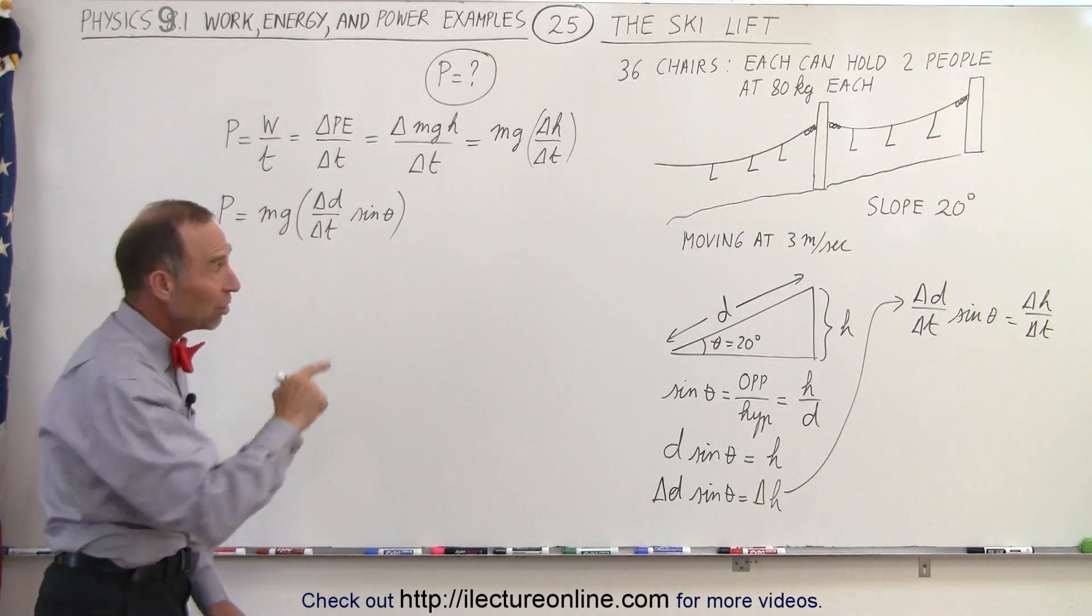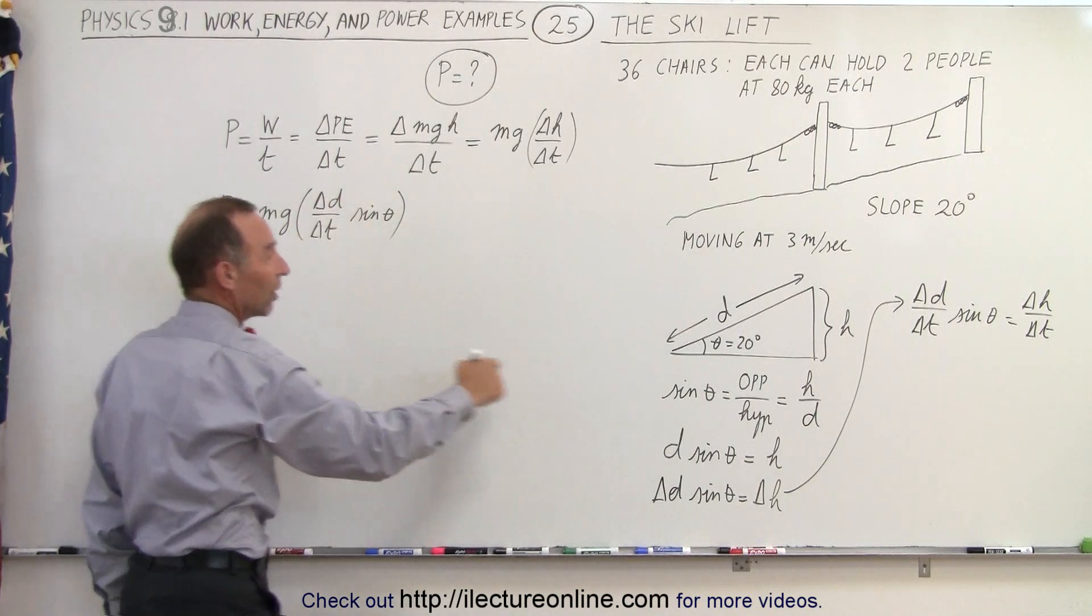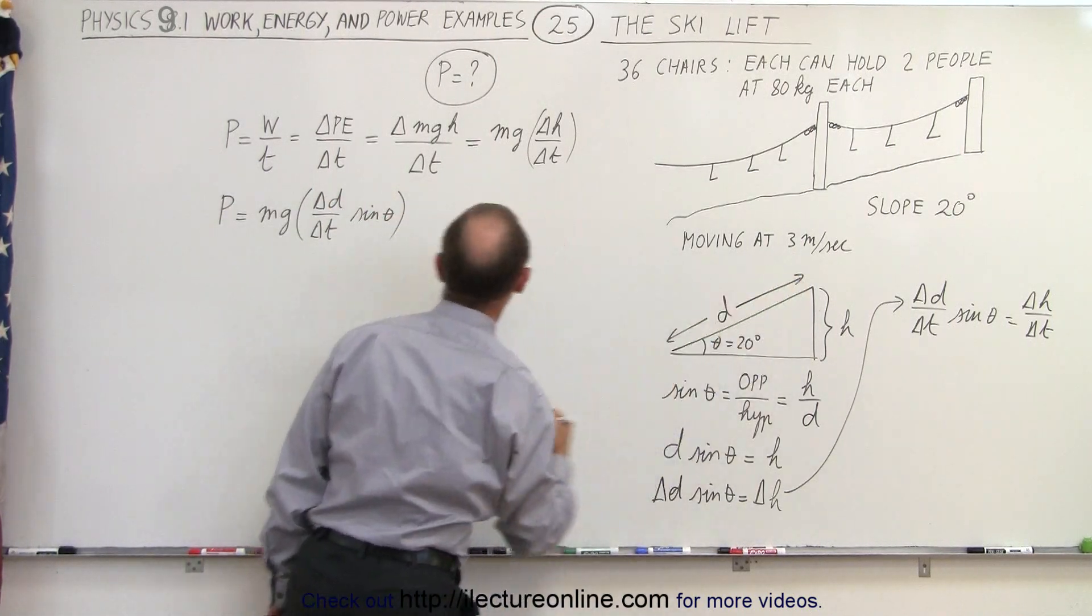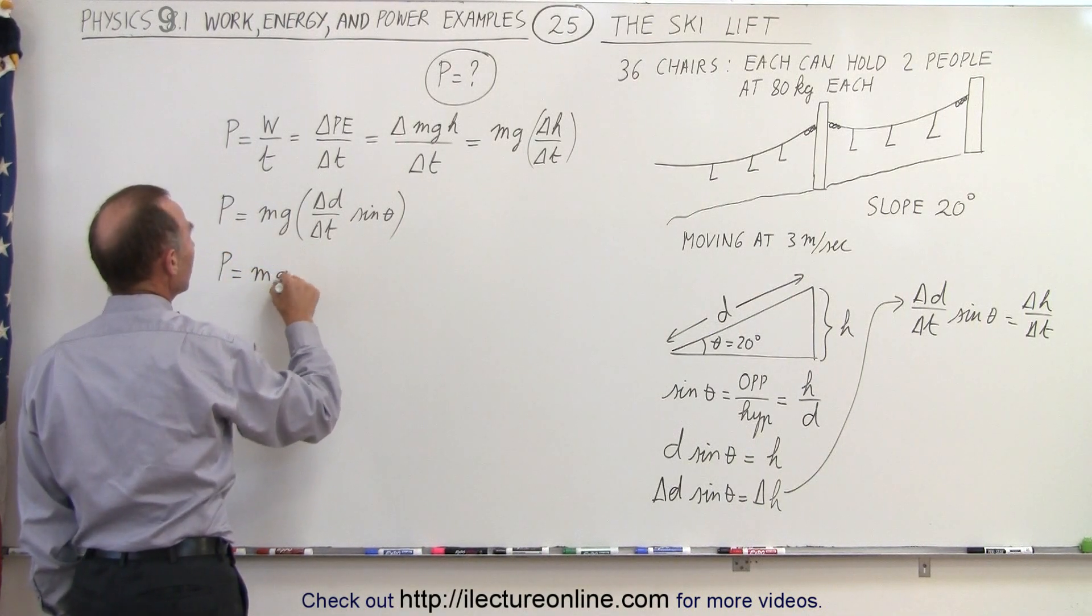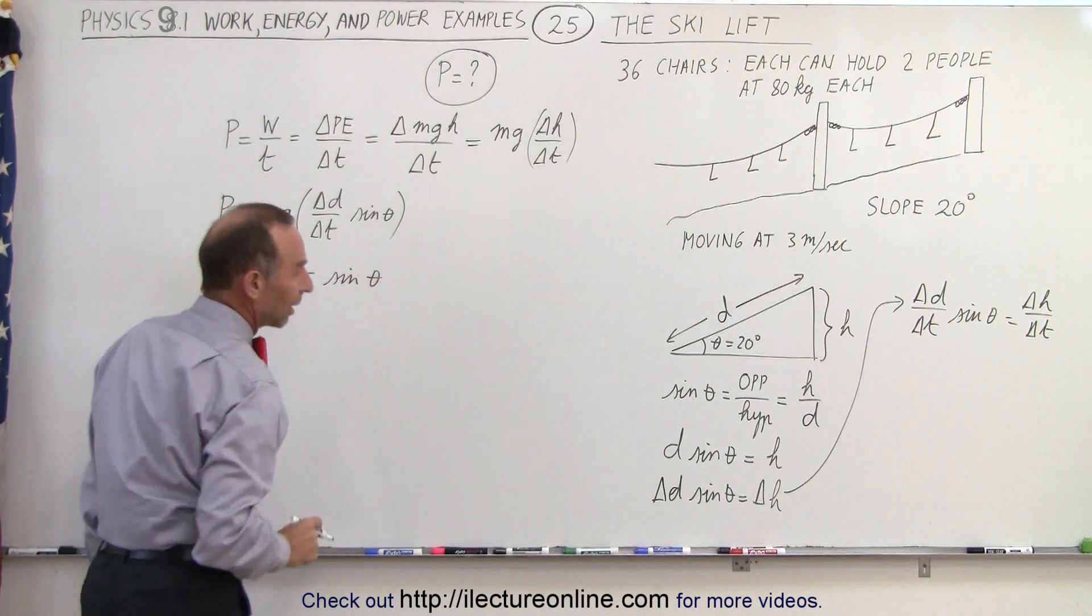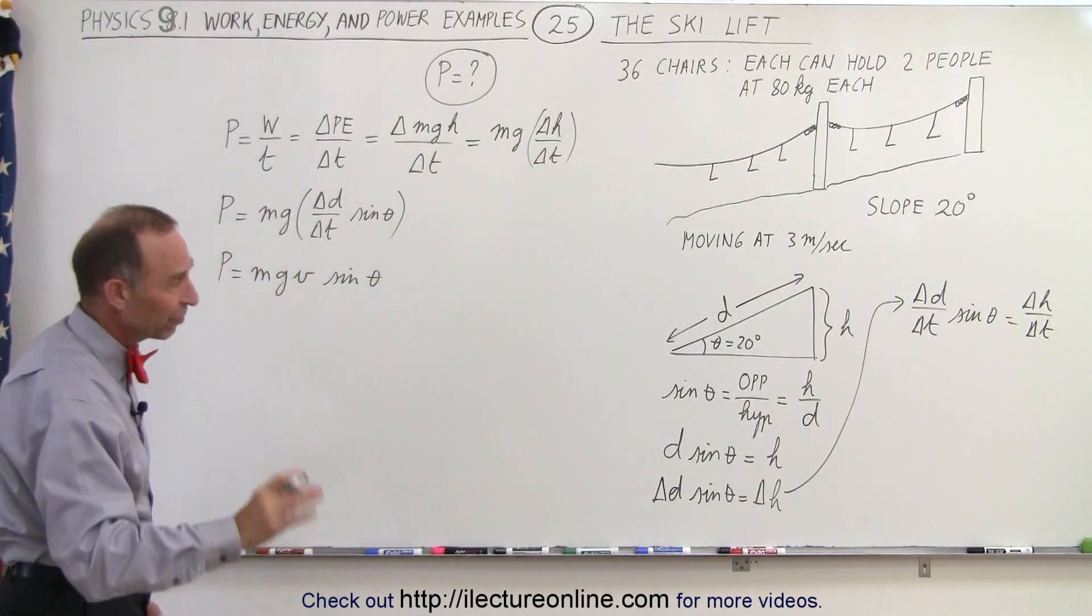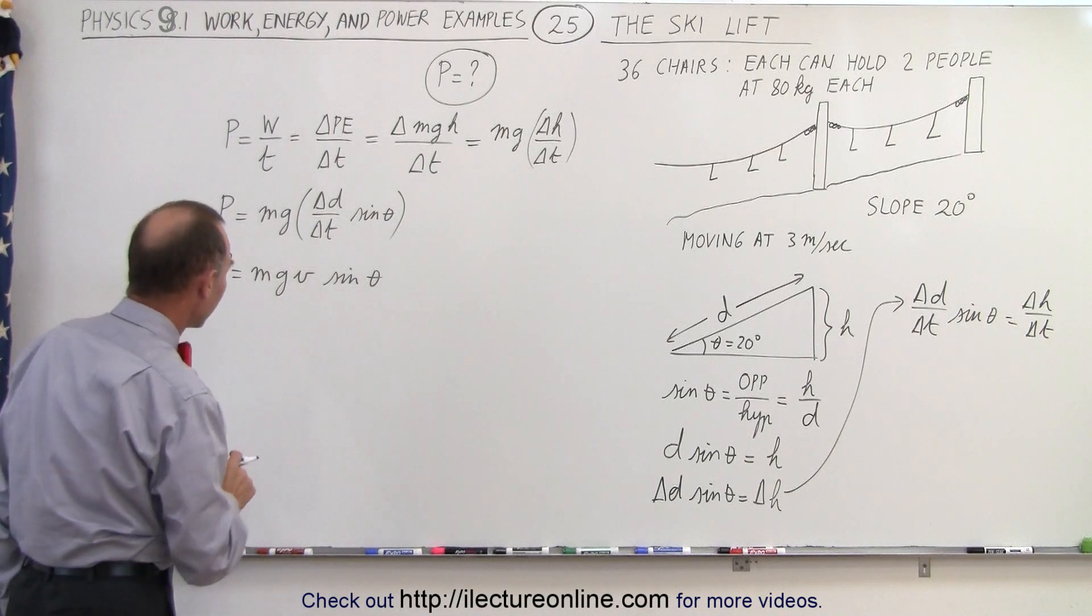Now the change in the distance going up the slope divided by the time—by definition that's the velocity of the skiers going up the hill. So that means that the power is equal to mgv times the sine of theta. That's of course ignoring friction and efficiency losses and all that, but for electric motors that's probably fairly close.